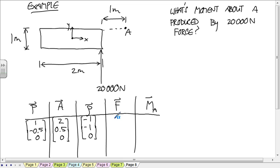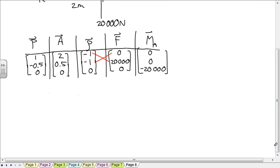What's the force vector? Yep, 0, 20,000, 0. And to take the cross product of this, it's easy in 2D. You just take negative 1 times 20,000 minus negative 1 times 0. And that's going to give you the z component. So we have 0, 0, negative 20,000. Any questions about that?